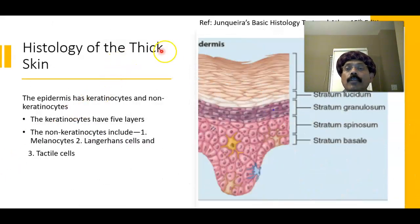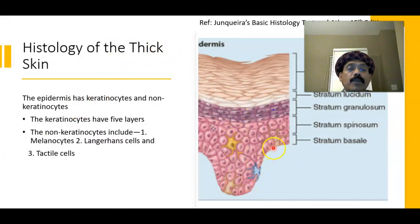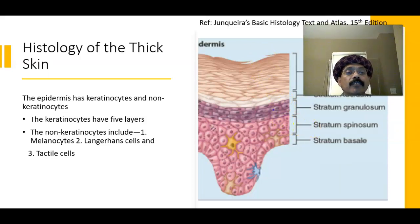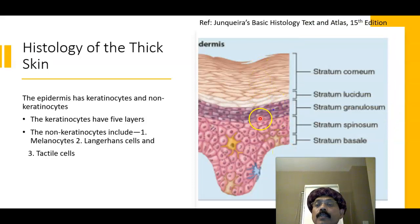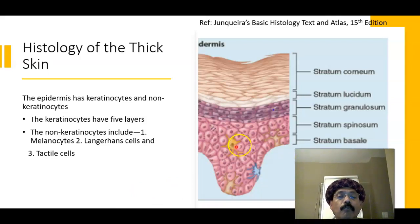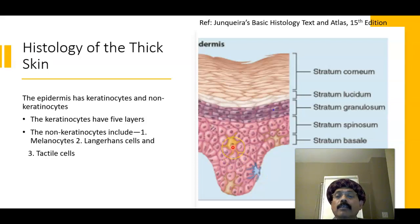To summarize the thick skin: we have keratinocytes arranged in five layers — stratum basale, stratum spinosum, stratum granulosum, stratum lucidum, and stratum corneum. We also have non-keratinocytes such as melanocytes, tactile cells (Merkel cells), and Langerhans cells (antigen-presenting cells).